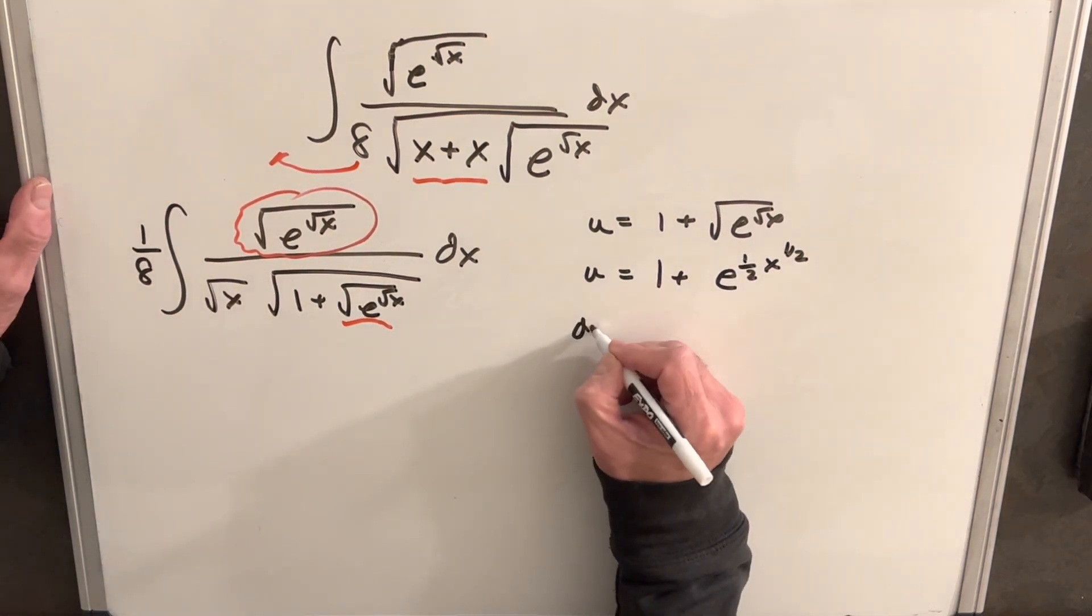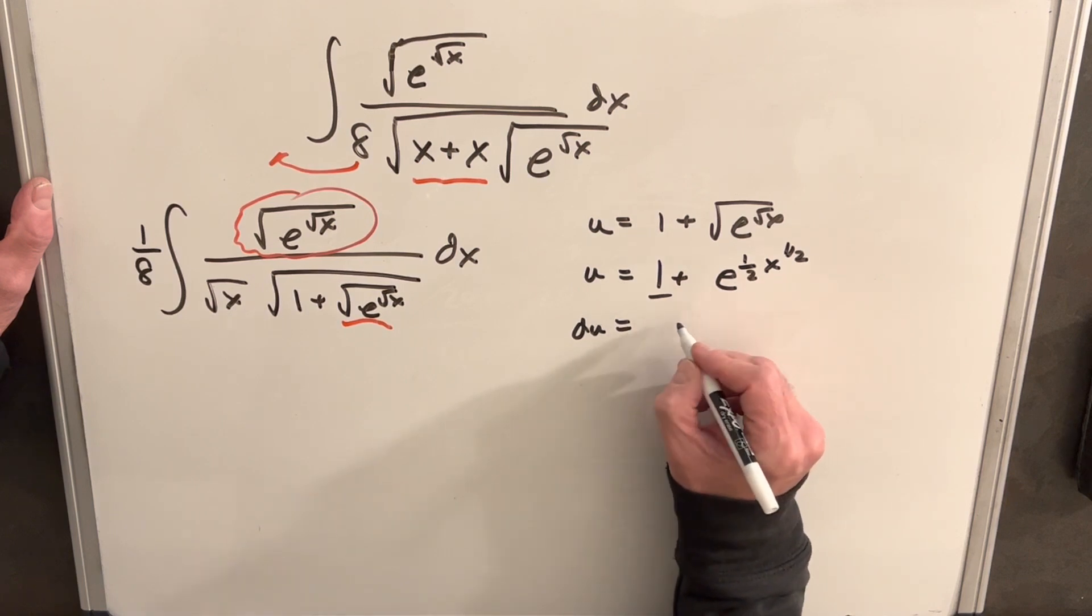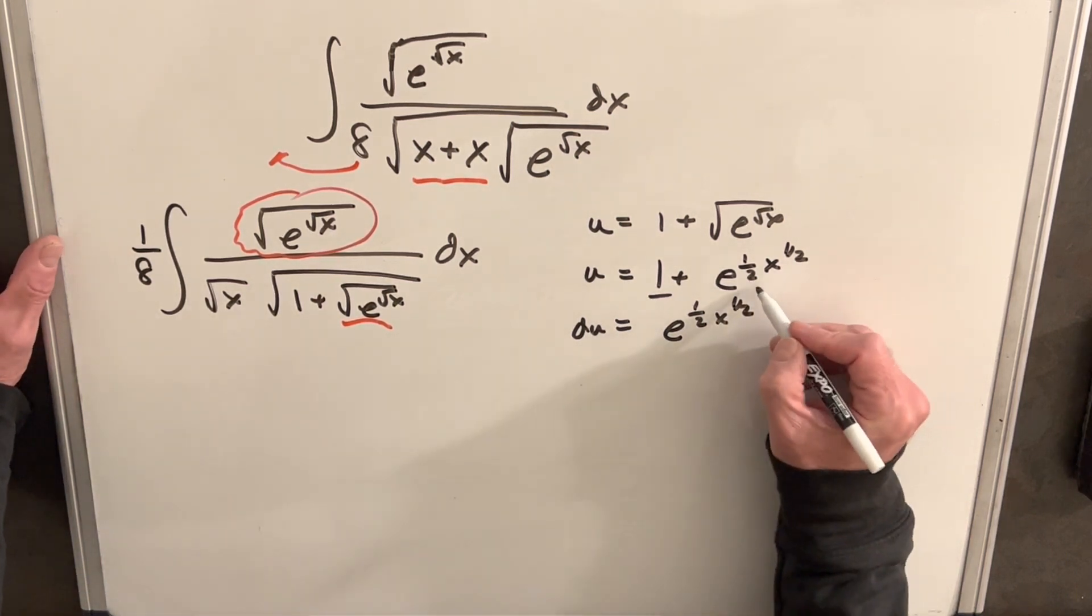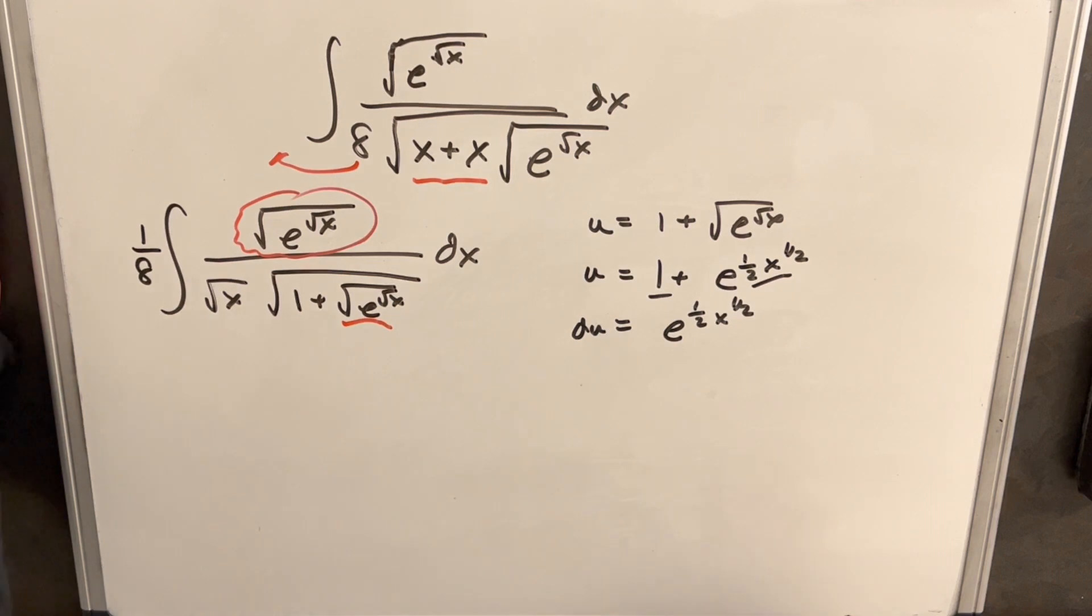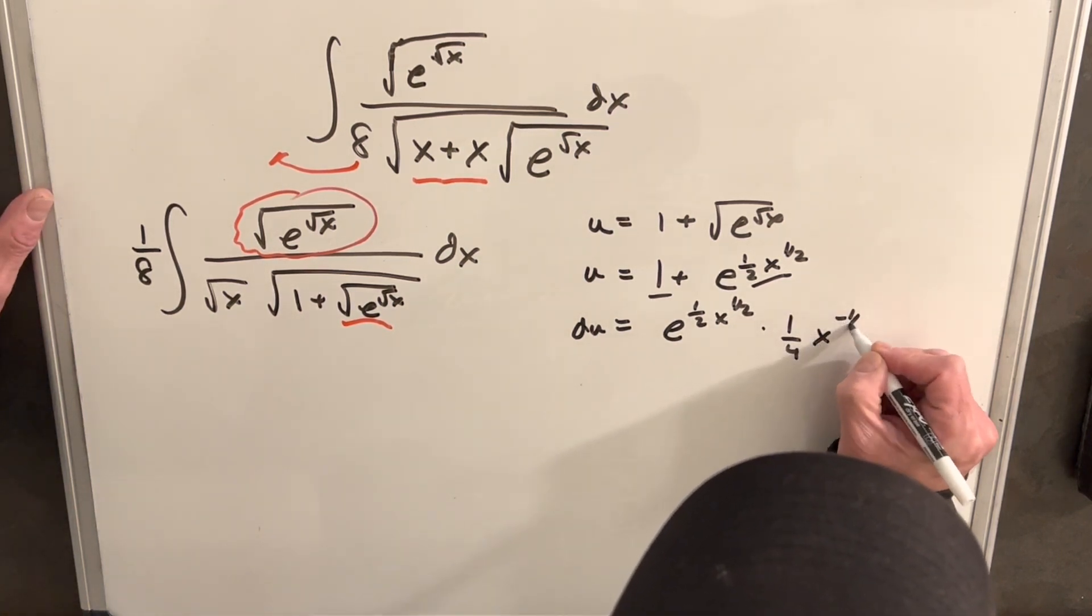Now we're ready to get our derivative. So we'll have du, derivative of 1 is 0. Then we'll have, at first we'll have e 1 half x 1 half, and we'll use the chain rule. We just need the derivative of this piece. And that's actually going to be 1 fourth x to the minus 1 half.